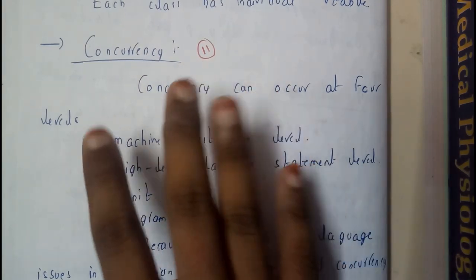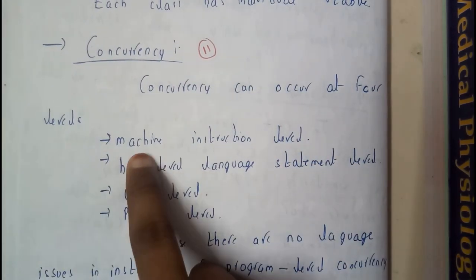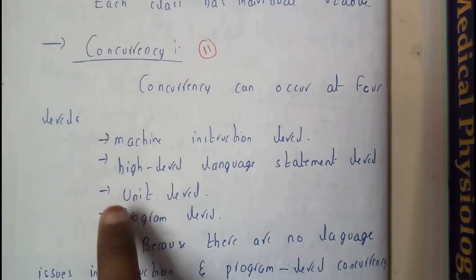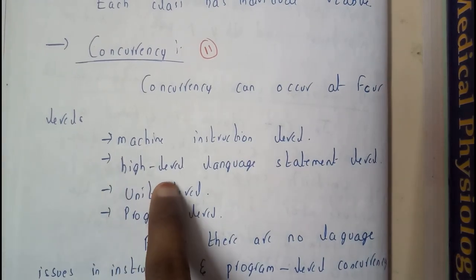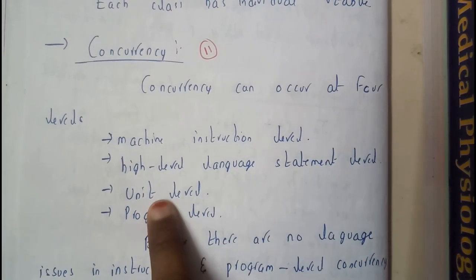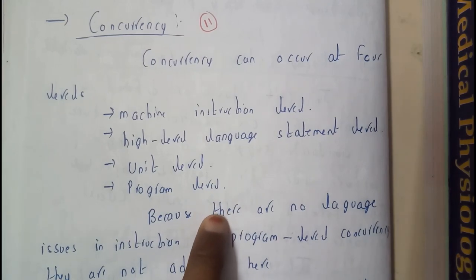Concurrency can occur at four stages or four levels: at machine instruction level, high level language statement level, or unit level or program level.